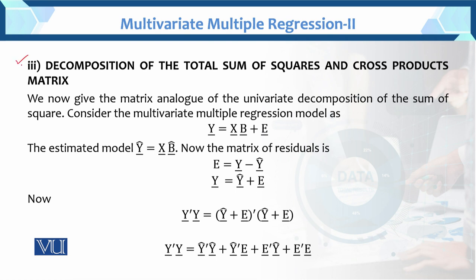The third property is the decomposition of the total sum of squares and the cross product matrix. In the decomposition we decompose the total sum of squares and the cross product matrix. Now we give the matrix analog of the univariate decomposition of the sum of squares. Consider the multivariate multiple regression model and the estimated model y-hat = x·b-hat, obtained by taking expectation with expected value of error equal to zero. The matrix of residuals: e equals y minus y-hat.